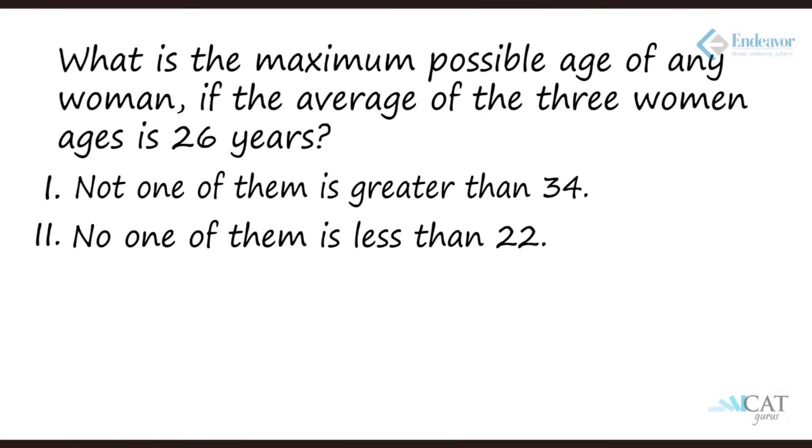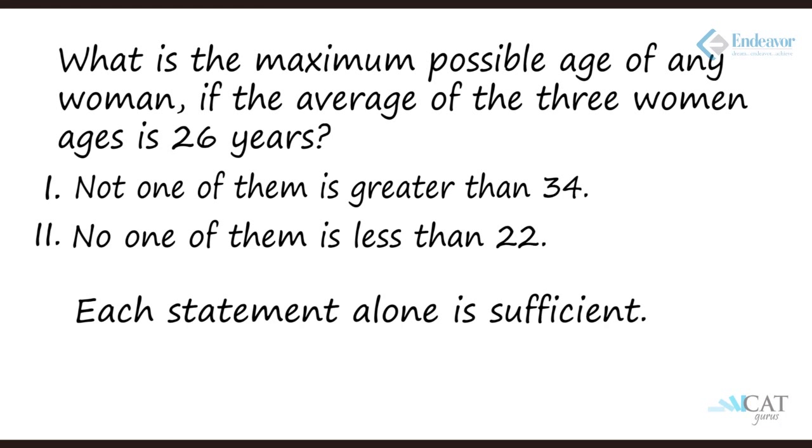Statement one is giving us an answer, so let's also check statement two: not one of them is less than 22. If we put two of them at the minimum — 22 each — their combined age is 44. The total is 78, so the maximum possible age for the third person is 34. Both statements are independently giving the same answer — it is a coincidence. We can conclude that statement one alone gives an answer and statement two alone also gives an answer, so we mark that option.